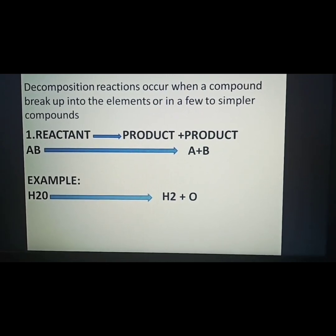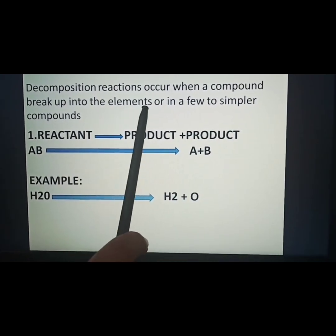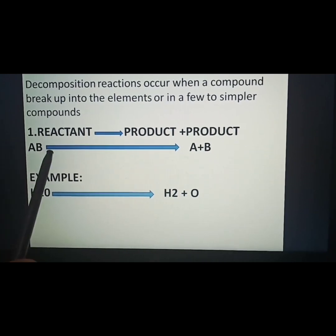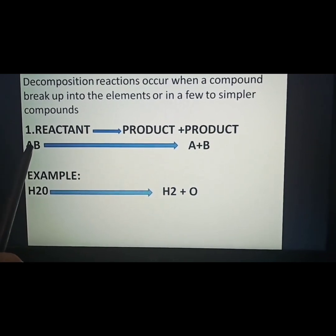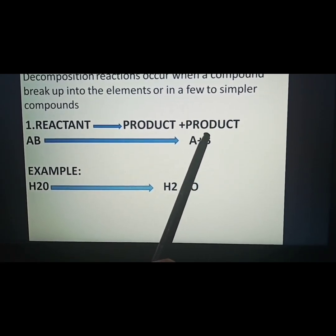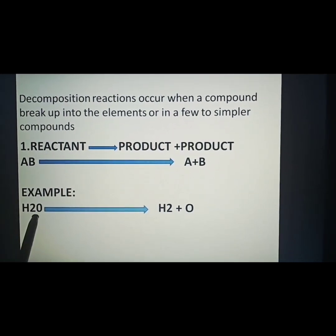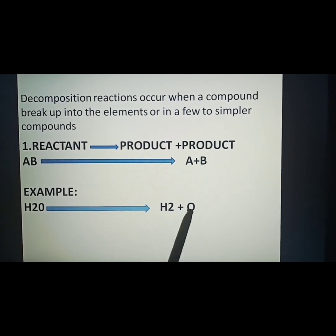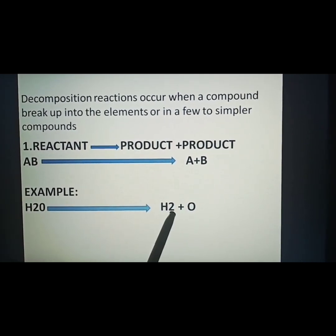A decomposition reaction occurs when a compound breaks up into its elements or into simpler compounds. General example: AB is a molecule — when this molecule decomposes, it converts into simpler substances A and B, where A and B are two products and AB is the reactant. For example, H2O when decomposed converts into hydrogen and oxygen — the two elements present in that molecule.